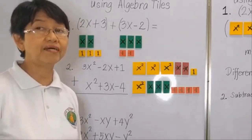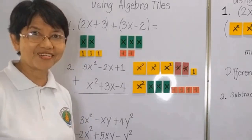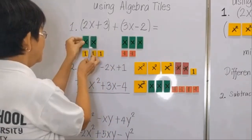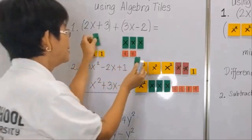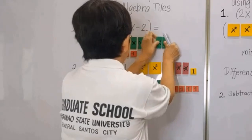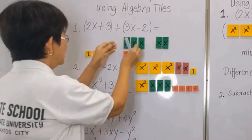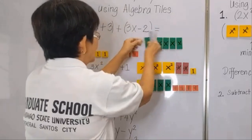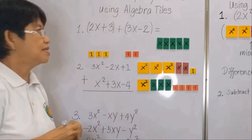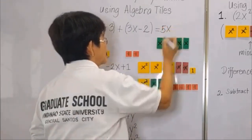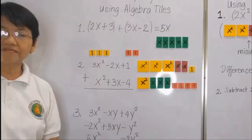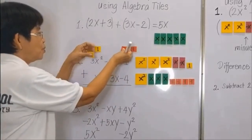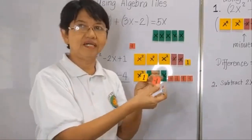The similar terms are similar areas or similar tiles. You will only add the green tiles or the x's together to get the answer, and we'll also add the unit tiles together. So we have 3 plus 2 — we have 5x's. So 2 plus 3x is 5x. Then we have 3 plus negative 2. Remember that if you put together one negative and one positive tile, it becomes a zero pair.